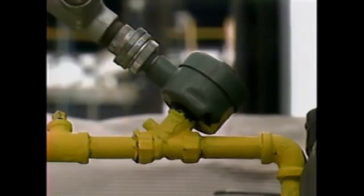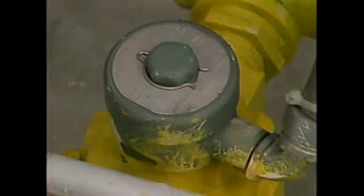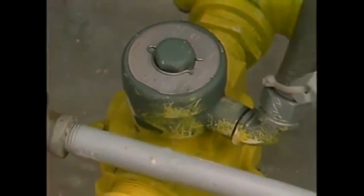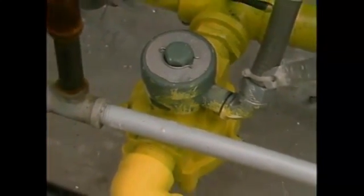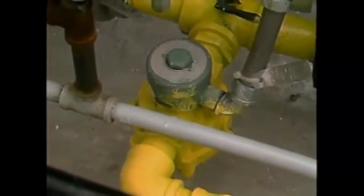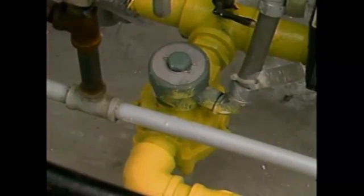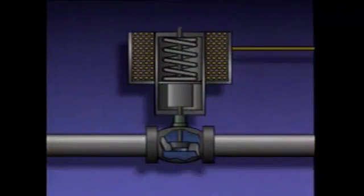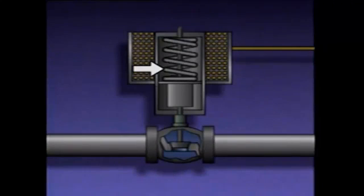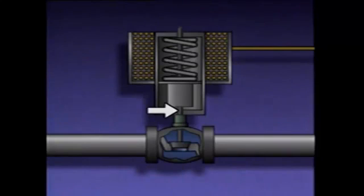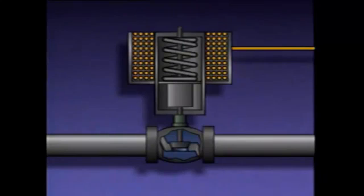A solenoid actuator, or simply a solenoid, is typically used for on-off control of a valve. Solenoids can position a valve from fully open to fully closed quickly, making them particularly useful for emergency shutoff. A solenoid actuator consists of a wire coil, a spring, an armature or core, and a stem which is connected to a valve.